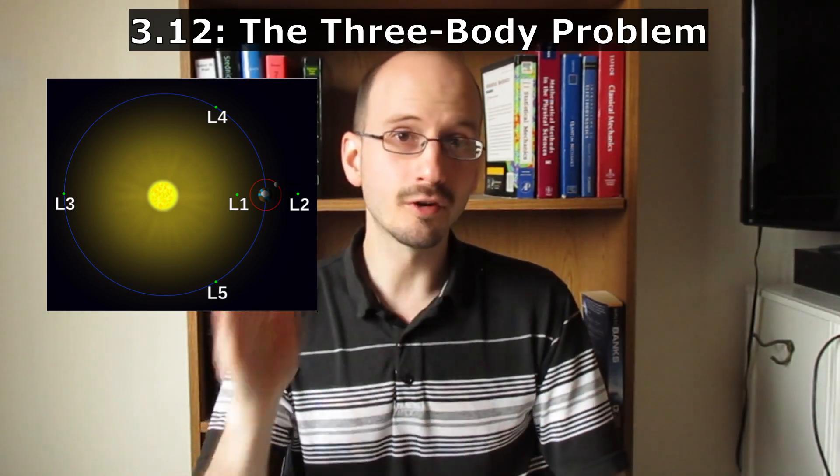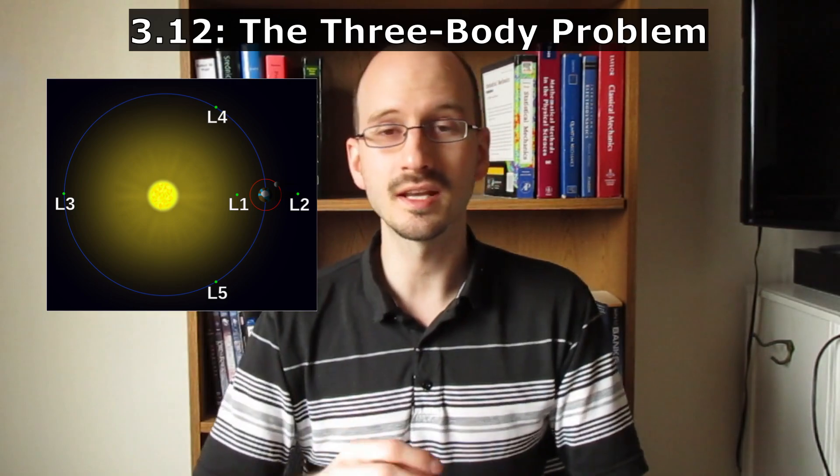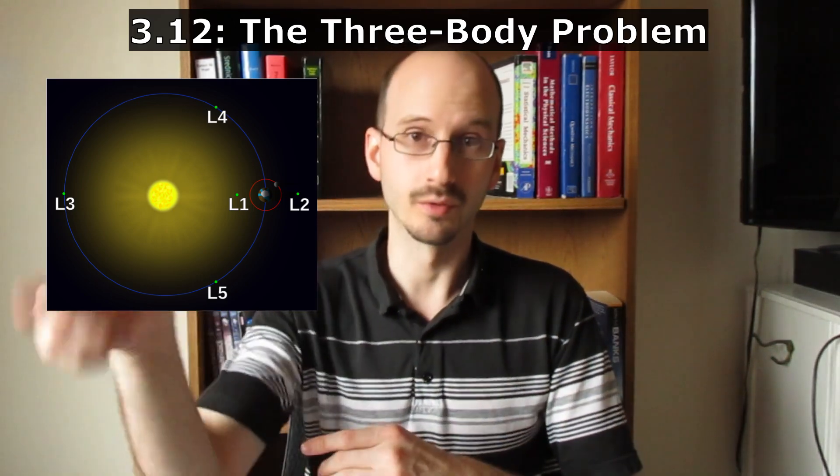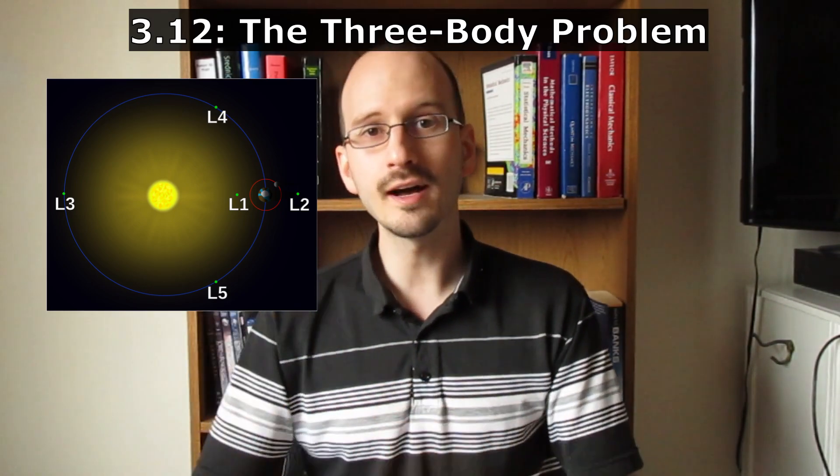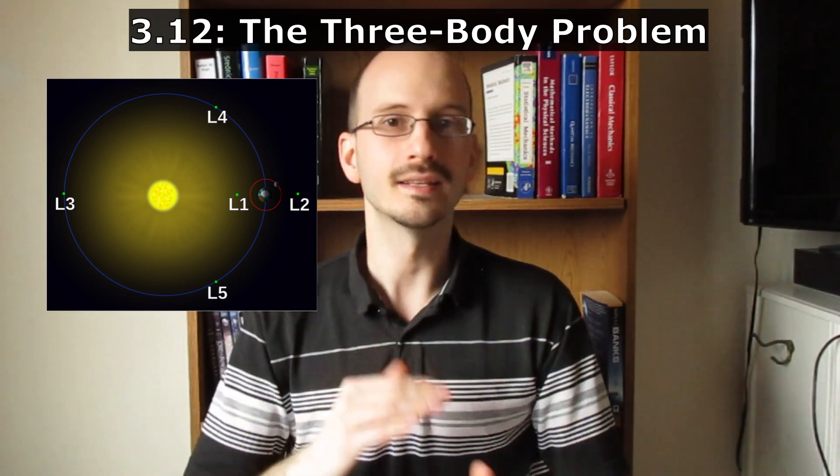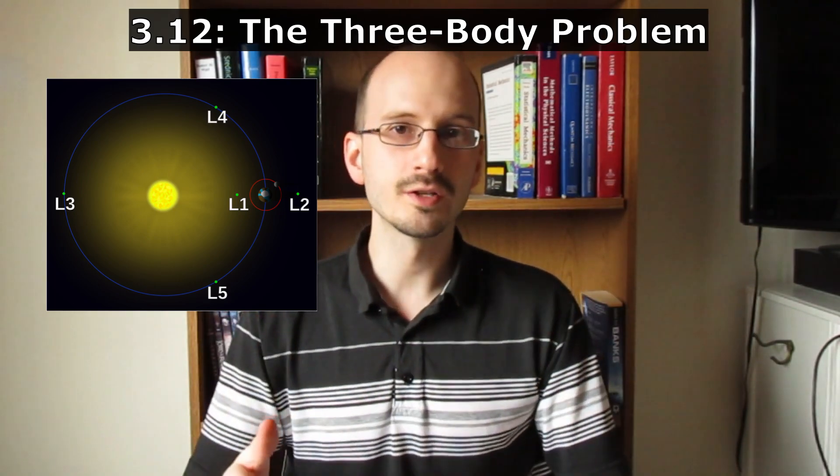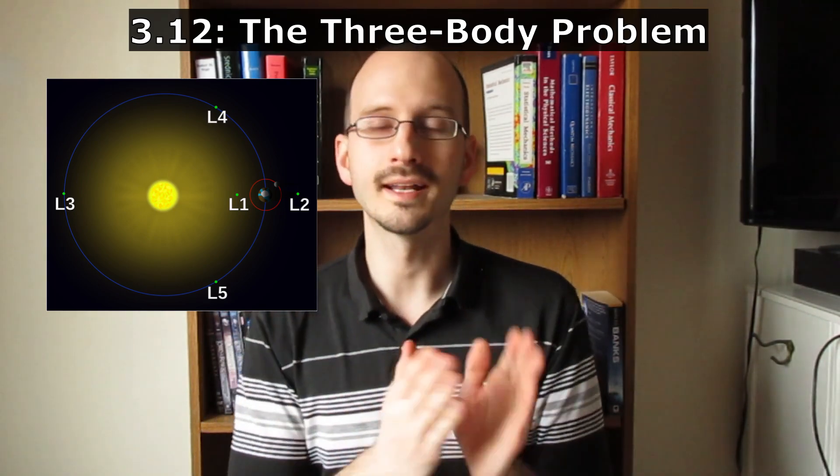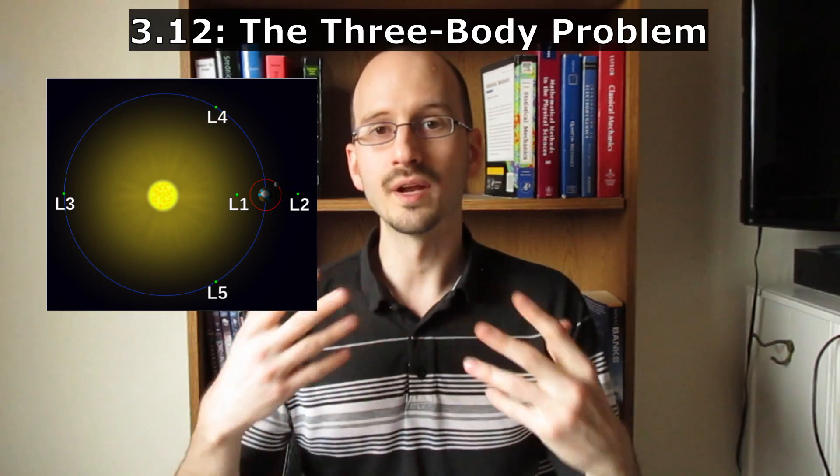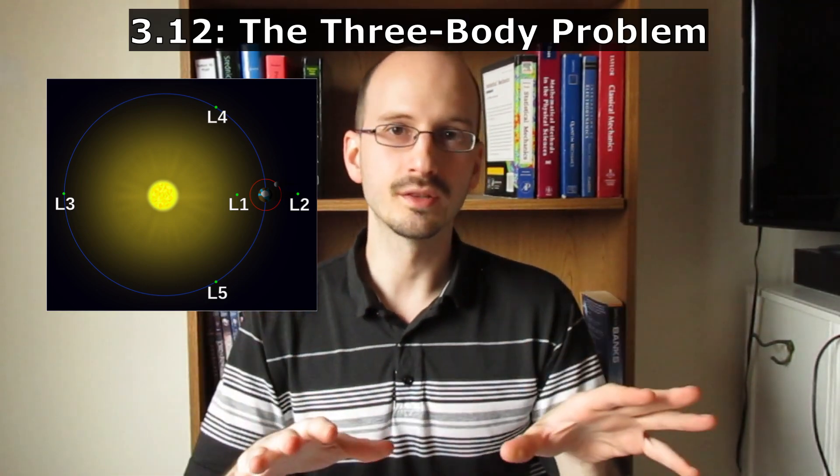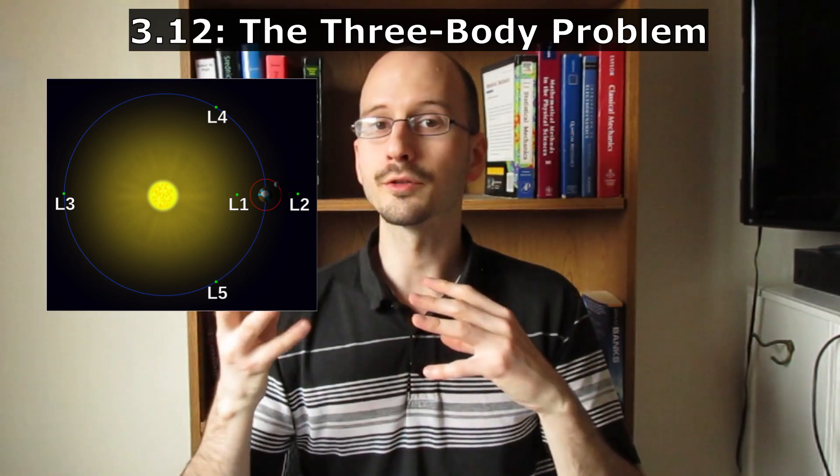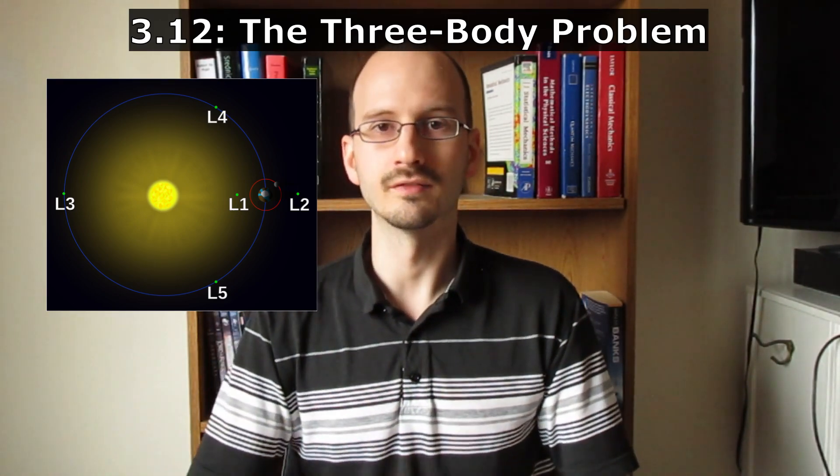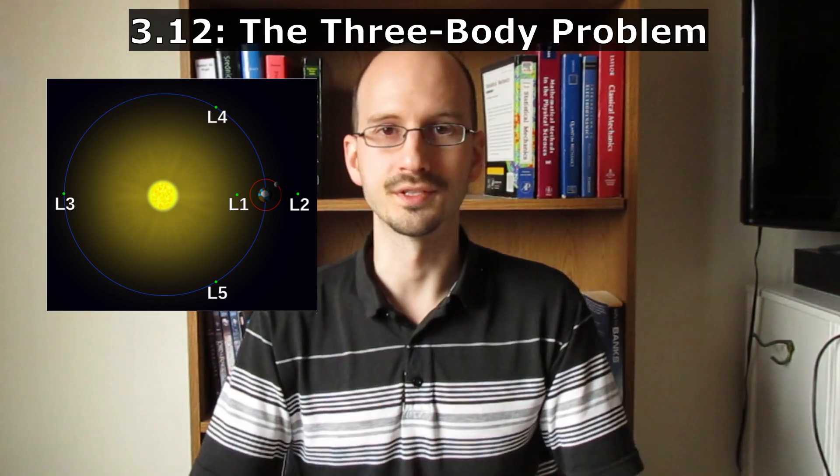L3 is on the far side of the sun, in almost the same place where the earth would be if it were over there. L4 is in earth's orbit ahead of the earth, and L5 is in earth's orbit behind the earth. Of these five Lagrange points, only L4 and L5 are stable. The rest, any satellite put in those positions, will have to make micro adjustments in order to stay there. The earth moon system also has five Lagrange points in similar positions.